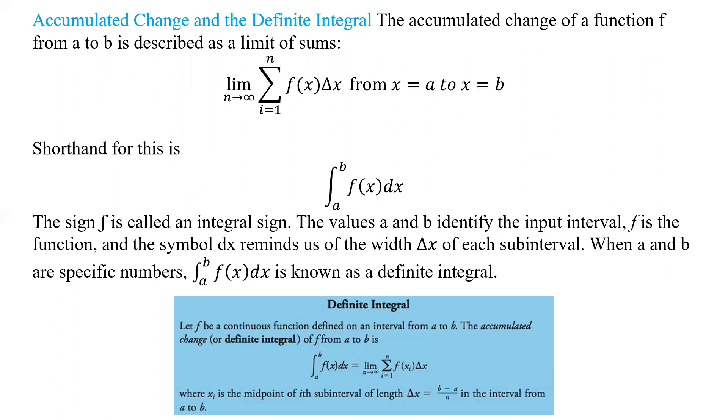Now, when a and b are specific numbers, it's called a definite integral. So if we actually have from 2 to 4, or 1 to 7, or something like that, it's a definite integral.